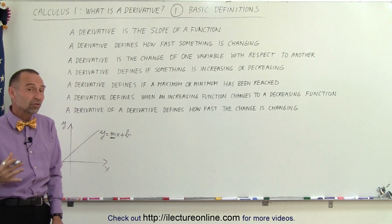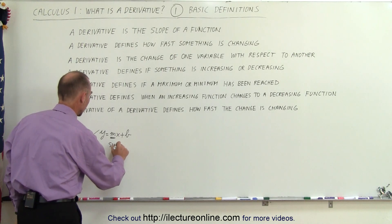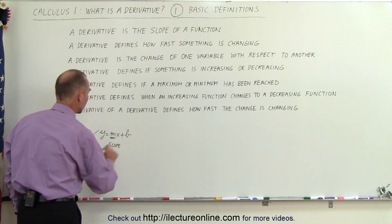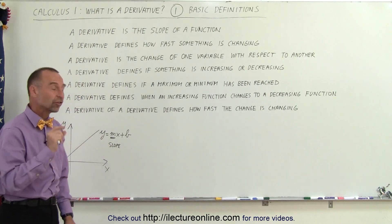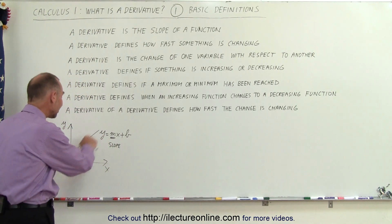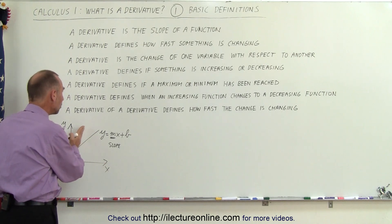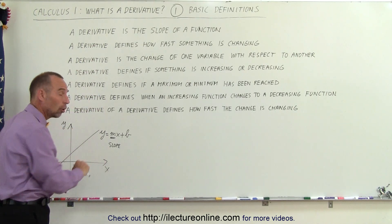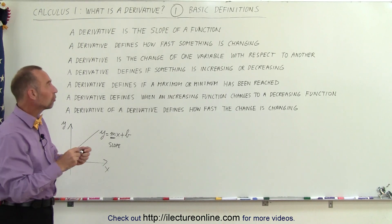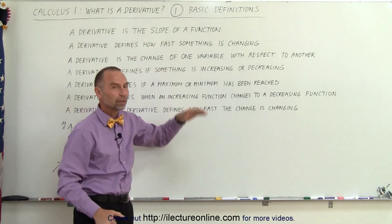This m in that equation represents the slope, and so what we're seeing here is that the derivative of this function is the slope of that function — the slope of this line right here. So that means the steeper the slope, the bigger the derivative; the less steep the slope, the smaller the derivative. The derivative actually represents the slope of a function.